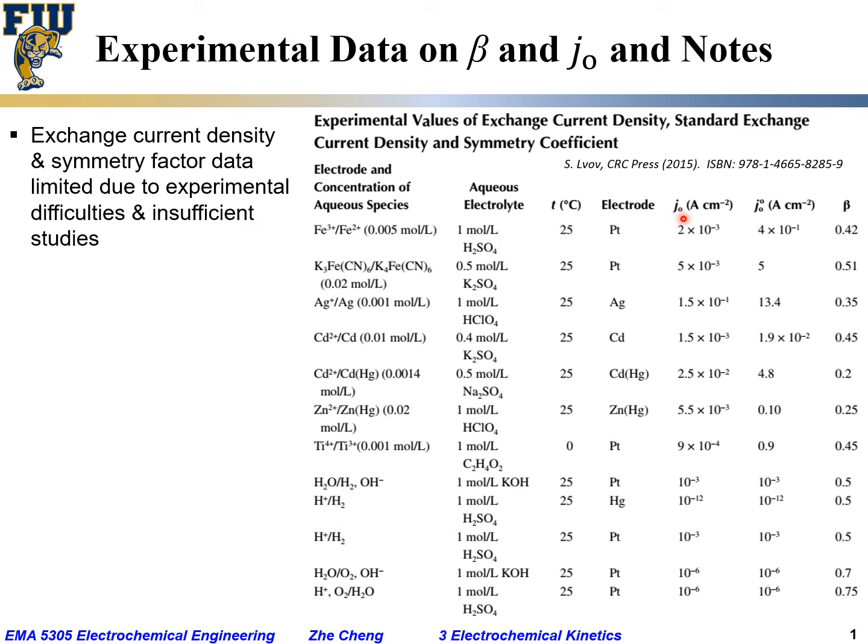The table shows the J0 exchange current density for the specific concentration data used, for example, 0.005 mol per liter, as well as J0 standard, which means the standard exchange current density, assuming extrapolated when the concentrations are at standard concentration, typically 1 molar or 1 molal, and the beta symmetry factor.